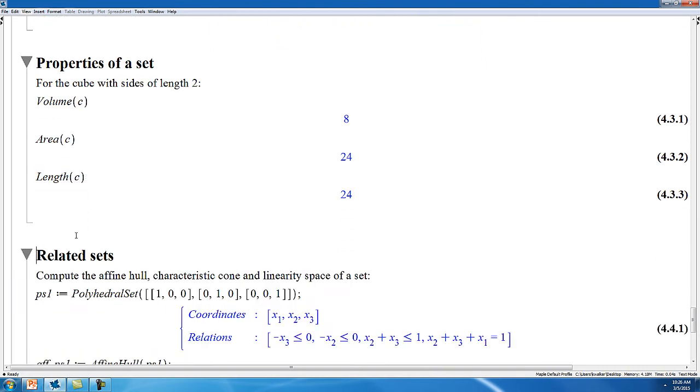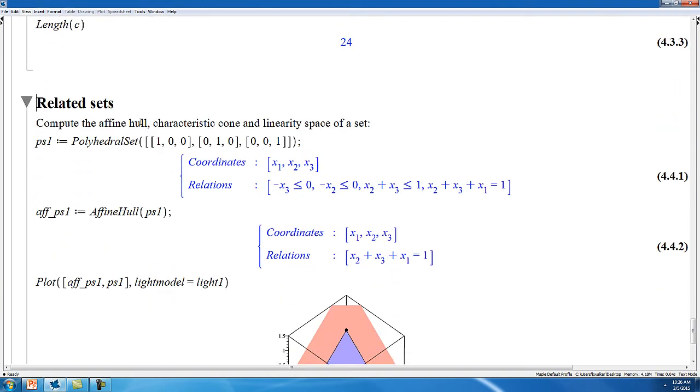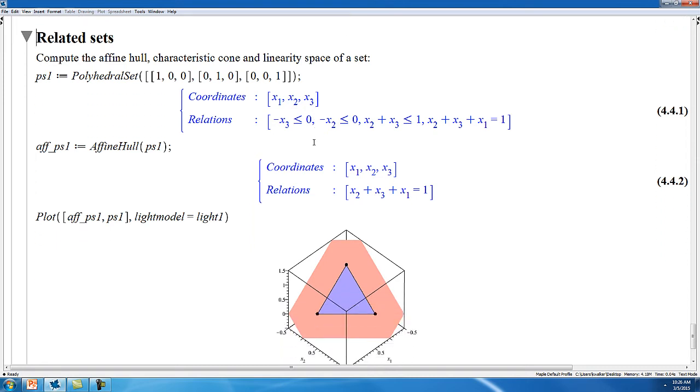And you can also compute various related sets, such as a set's affine hull, its characteristic cone, or its linearity space. So for example, a triangle in 3D space, its affine hull consists of the plane in which the triangle lies.